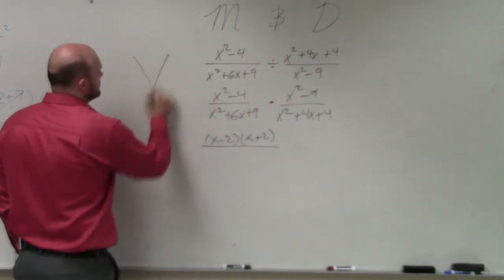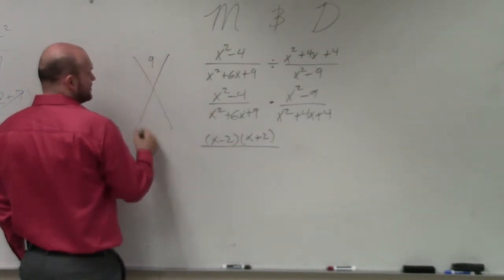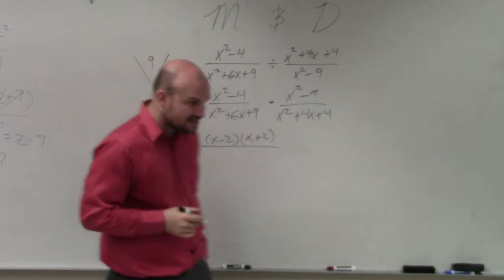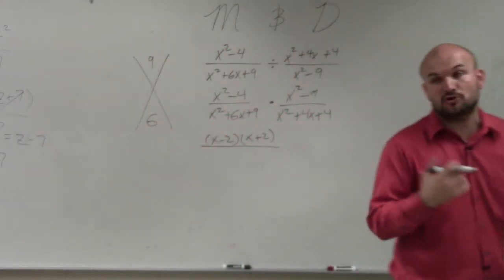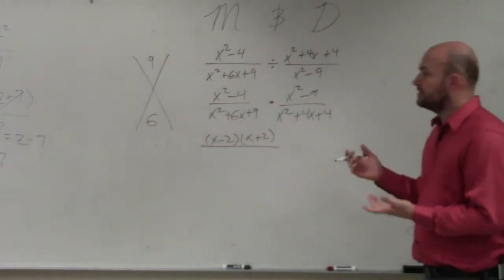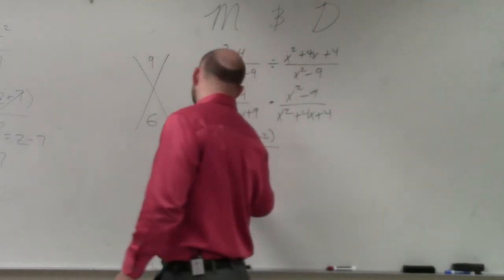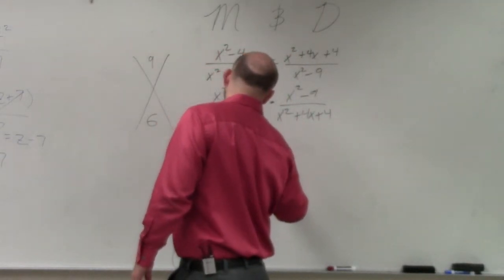Over here, I'll just set up a trinomial. You can see what two numbers multiply to give you 9, add to give you 6. It's positive and positive, that means both factors have to be positive. So therefore, hopefully you guys can see that it's going to be x plus 3 times x plus 3.